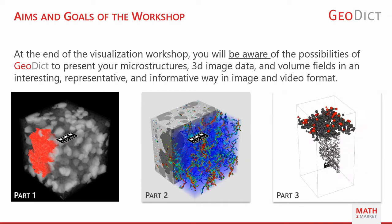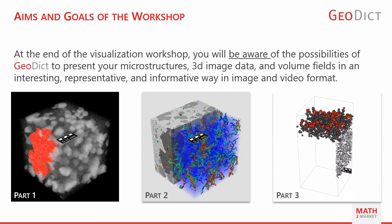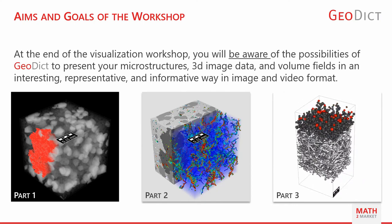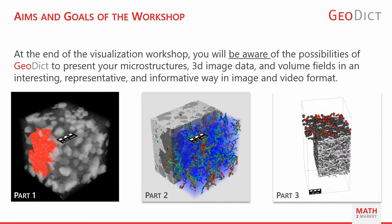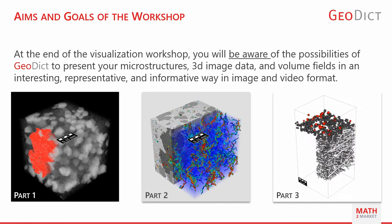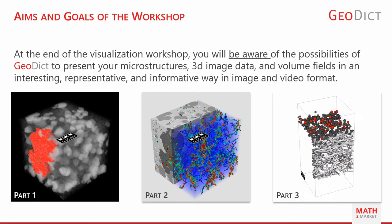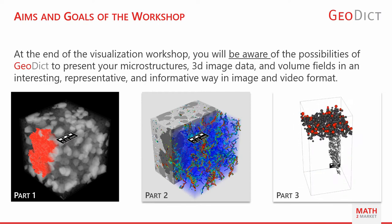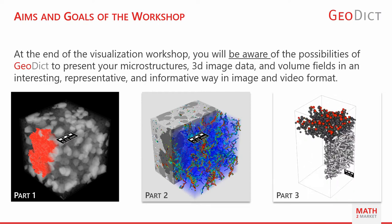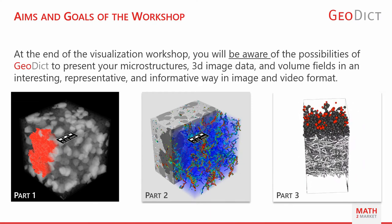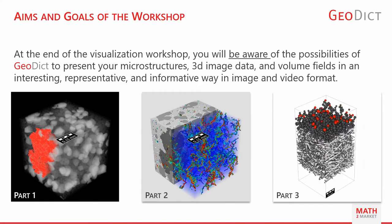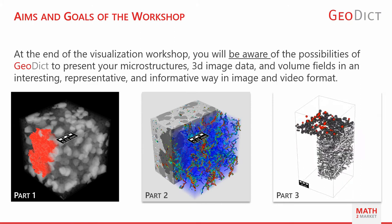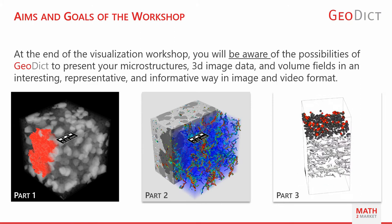In part two, we will use the knowledge gained in part one to visualize a result field from a simulation. In addition, we will get to know further visualization options for such result fields. We will then save our resulting images using the built-in GeoDict Easy Image App. In part three, we will look at the possibilities of video generation in GeoDict. We will see how to create videos using the result viewer and GDR files and how to apply and adjust the templates in the video dialog.